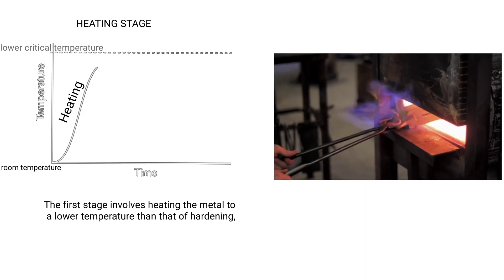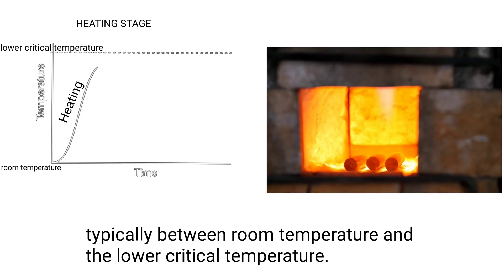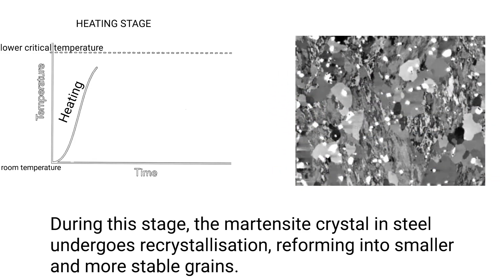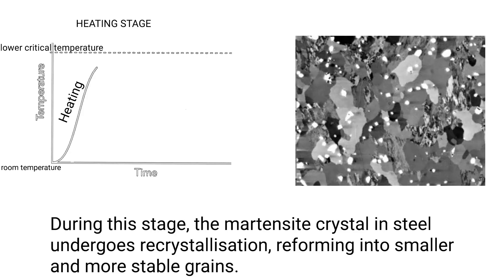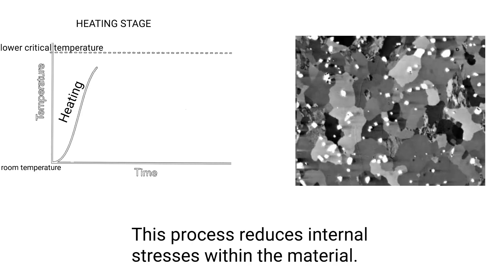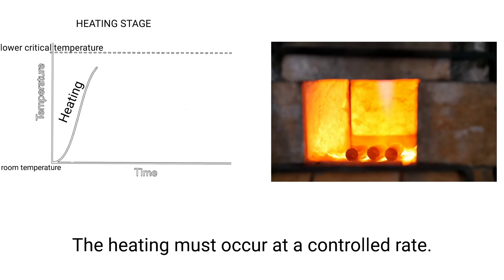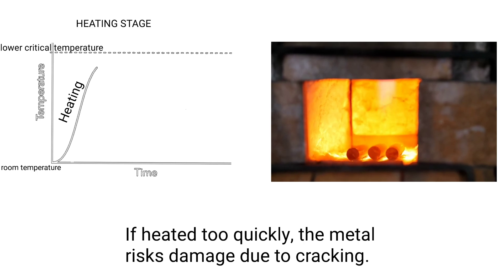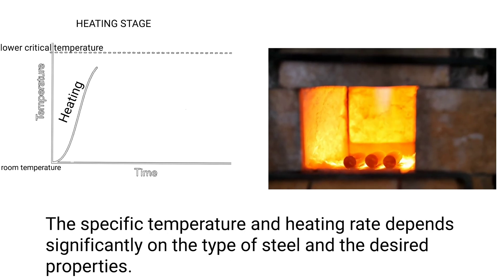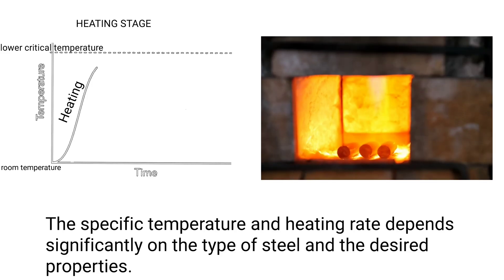The first stage involves heating the metal to a lower temperature than that of hardening, typically between room temperature and the lower critical temperature. During this stage, the martensite crystal in steel undergoes recrystallization, reforming into smaller and more stable grains, which reduces internal stresses within the material. The heating must occur at a controlled rate — if heated too quickly, the metal risks damage due to cracking. The specific temperature and heating rate depend significantly on the type of steel and the desired properties.